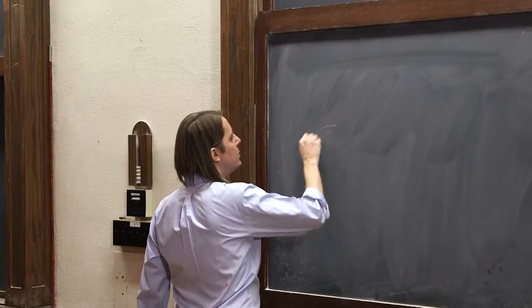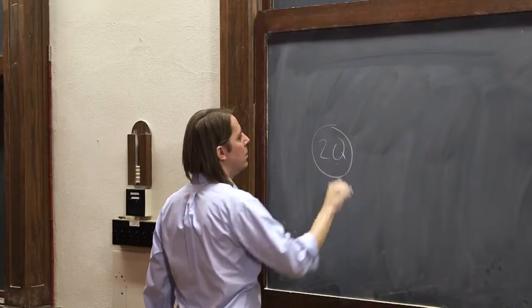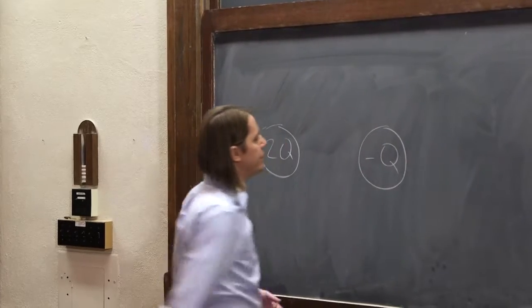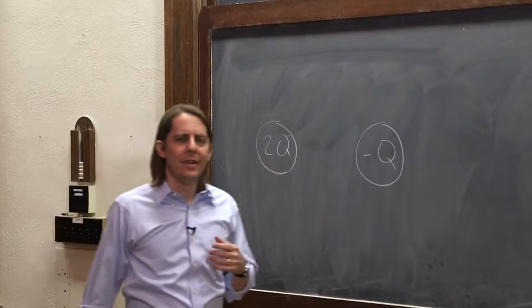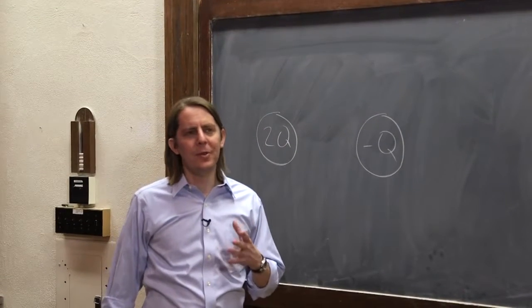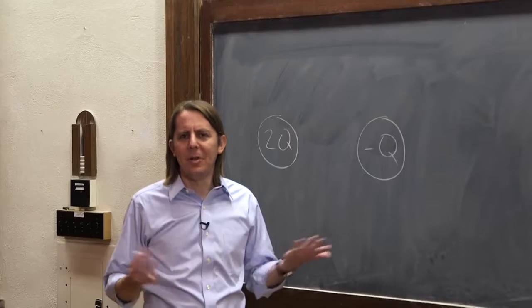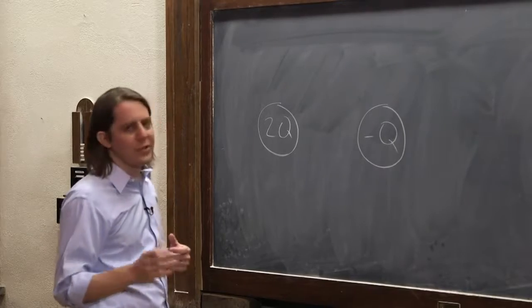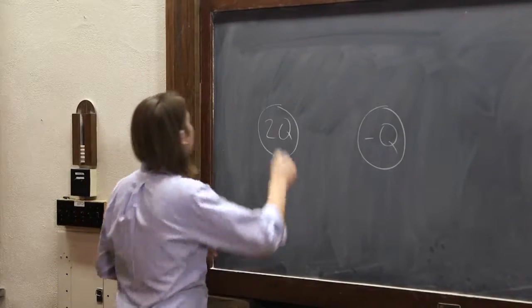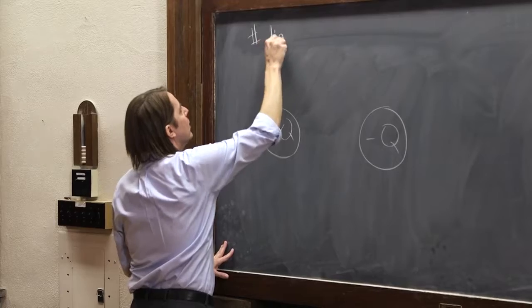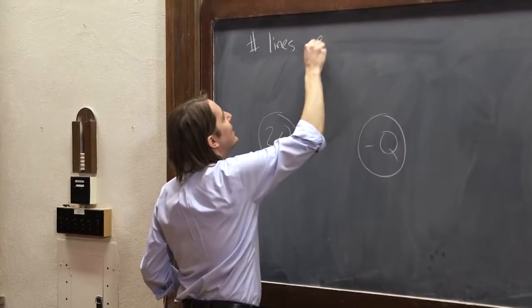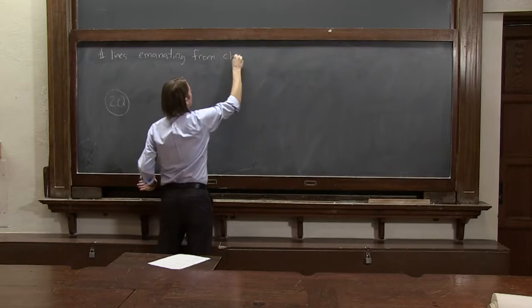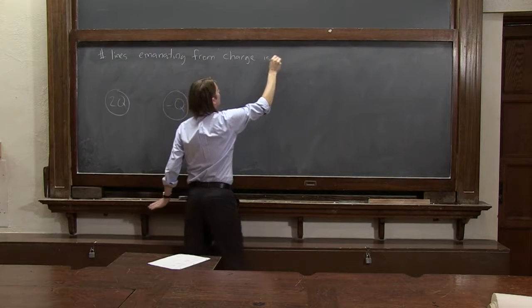Let's think about a charge 2q and a charge minus q. You might start to realize that if the magnitude of the field is the density of lines, then it seems like it depends on how many lines you decide to draw. It seems kind of arbitrary. I could have drawn four lines or eight lines or 200 lines. There is sort of a rule when you're drawing these: the number of lines emanating from a charge is proportional to the charge.